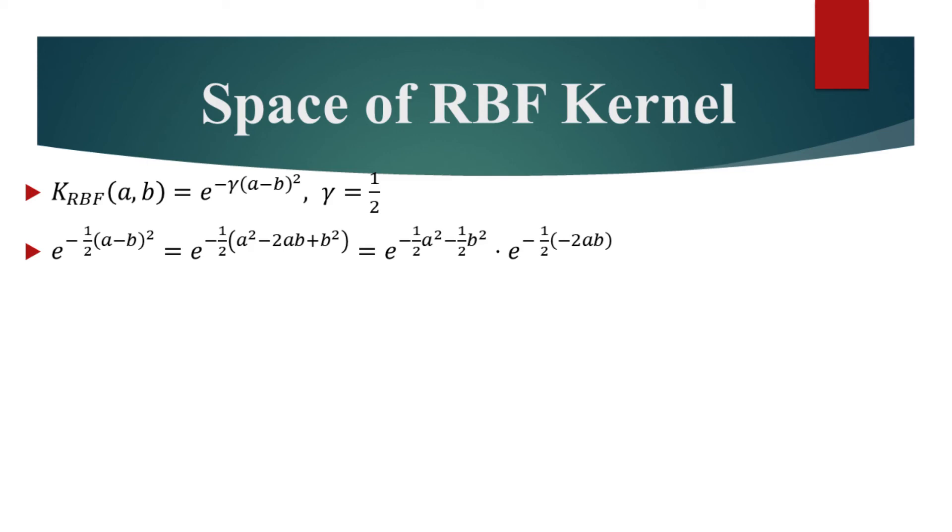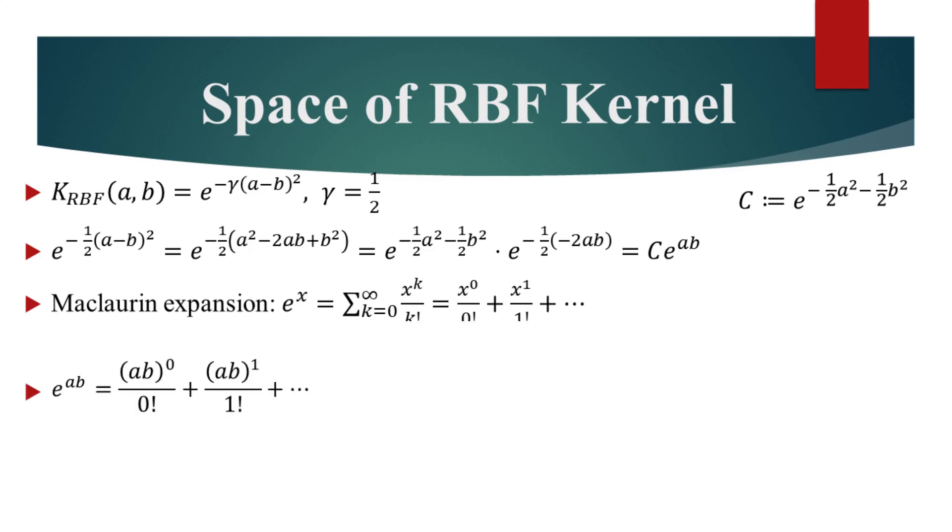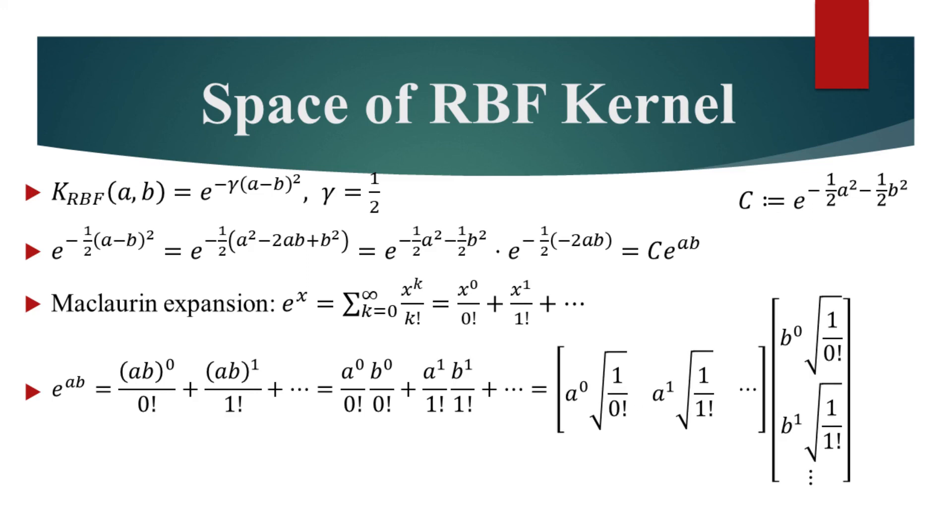The left hand side of this product is a constant and we will denote it with C. Now we have C times e to the power A times B. Recall the Maclaurin expansion of e to the x. It is an infinite sum. We can write down the same for e to the A times B. And because we get an infinite sum of products, that can be rewritten as a dot product between vectors with infinite number of elements.